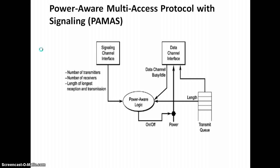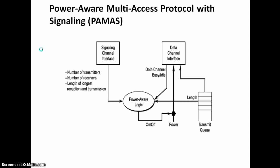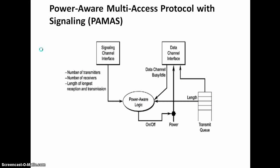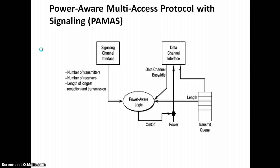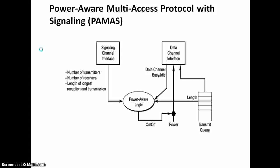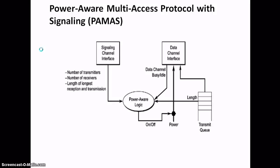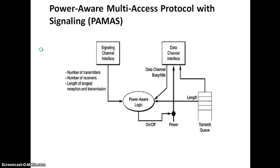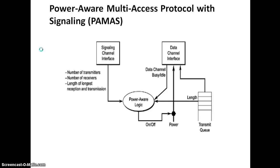Then power-aware multi-access protocol with signaling. It is called PAMAS. PAMAS is based on MACA protocol with addition of a separate signaling channel. Two channel interfaces: signaling channel, where RTS-CTS-Busy Lock exchange occur over this channel, and data channel. PAMAS conserves battery power by selectively powering off nodes that are not actively transmitting or receiving packets. In PAMAS, nodes are required to shut themselves off if they are overhearing other transmissions not directed to them. Each node makes an independent decision about whether to power off its transmitter.